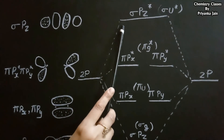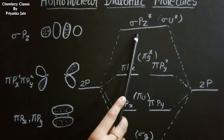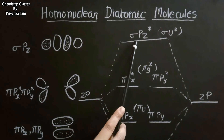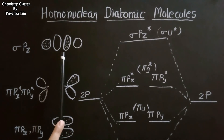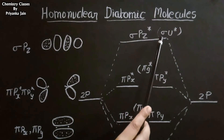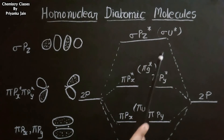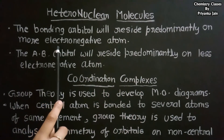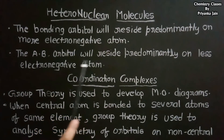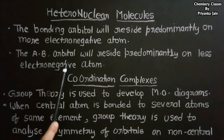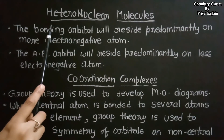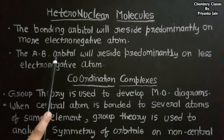The highest energy level is the σpz anti-bonding molecular orbital, formed by the overlapping of two pz orbitals. Its symmetry is ungerade, so it is denoted as σu anti-bonding. In heteronuclear diatomic molecules, the bonding orbital resides predominantly on the more electronegative atom, while the anti-bonding orbital resides predominantly on the less electronegative atom. For example, in carbon monoxide, the bonding MO resides mostly on oxygen, and the anti-bonding MO resides mostly on carbon.